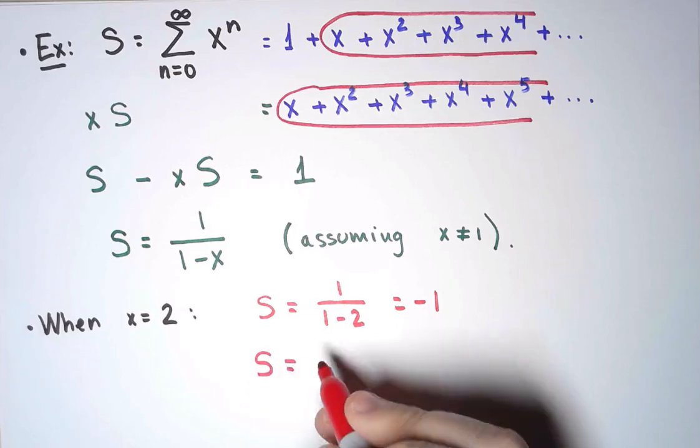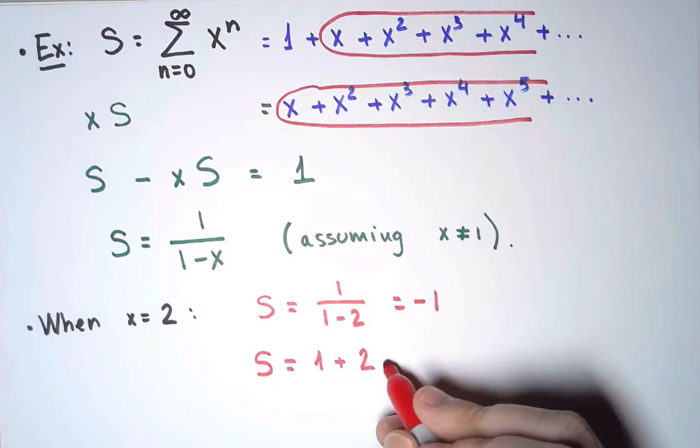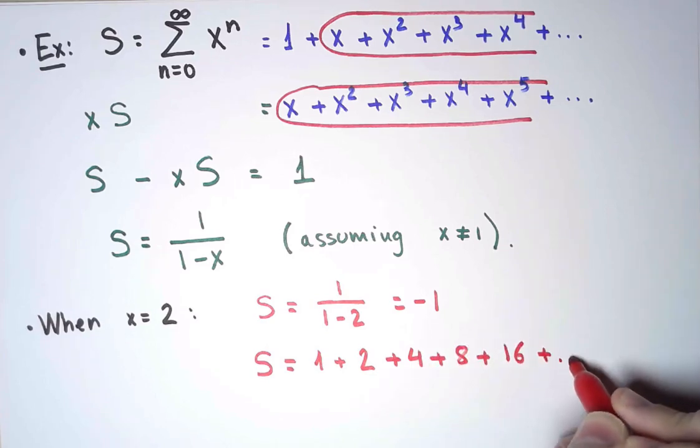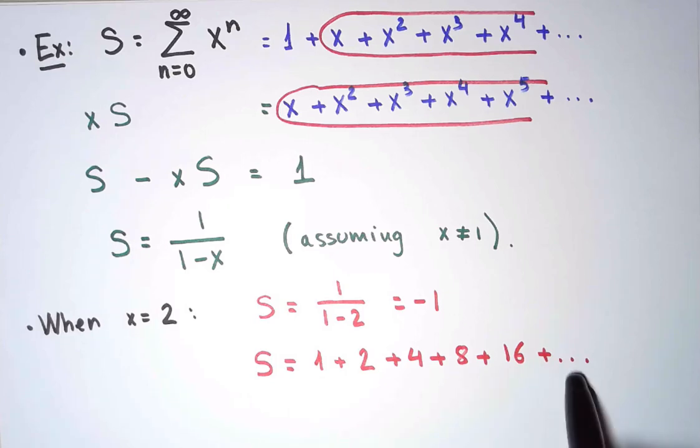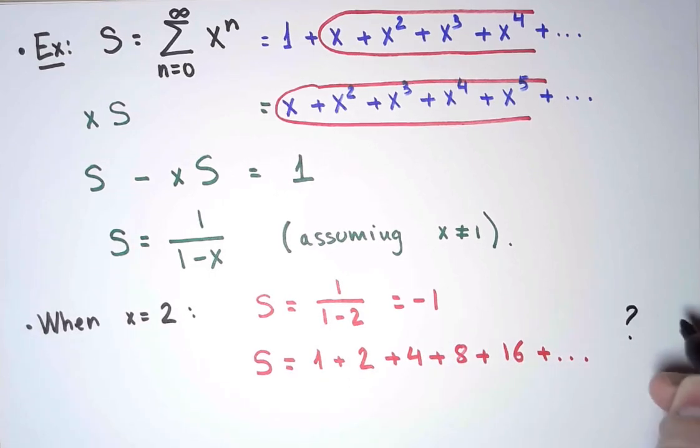But on the other hand, when x equals 2, what I am adding is 1 plus 2, plus 2 squared, which is 4, plus 8, plus 16, and so on. And this looks wrong. This is wrong. There is no way this sum is a finite number. This should be infinity. But in particular, I'm certain this sum cannot be a negative number, cannot be minus 1. So this is wrong.